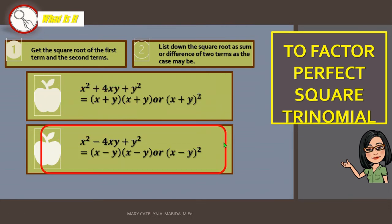Now, when the first operator is subtraction, then you would also have subtraction for your binomial or for your square of a binomial. So, what does that mean? x squared minus 4xy plus y squared, then you will have the quantity of x minus y times the quantity of x minus y or the quantity of x minus y squared.